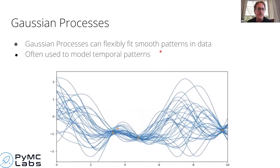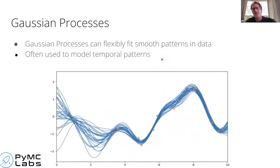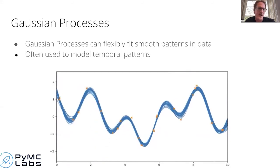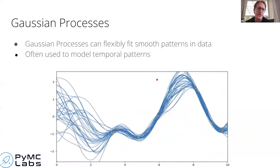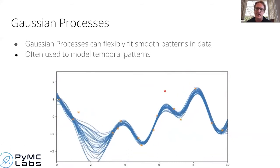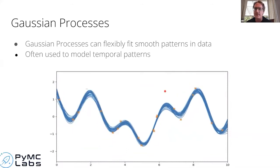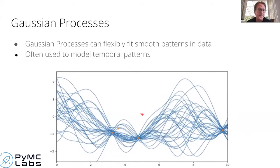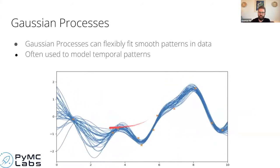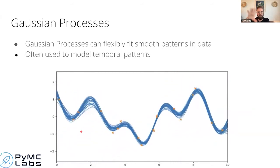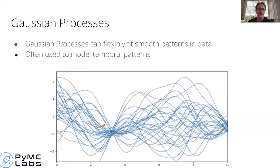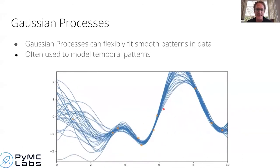GPs would be used all the time if they weren't a bit slow — they don't scale very well, and a lot of the hard part is thinking about larger datasets. They're commonly used for time series or spatial statistics, with a history in geophysics. One important thing to see is that in areas where there aren't many data points, there are many different lines, giving you a sense of uncertainty as well — GPs don't just give you the best estimate.